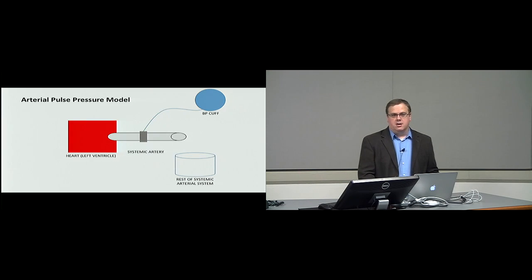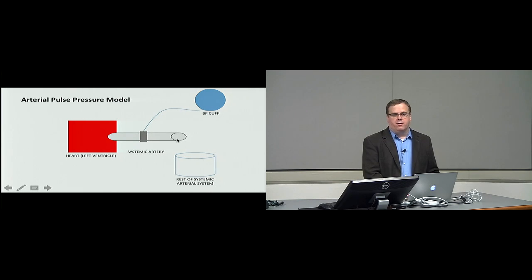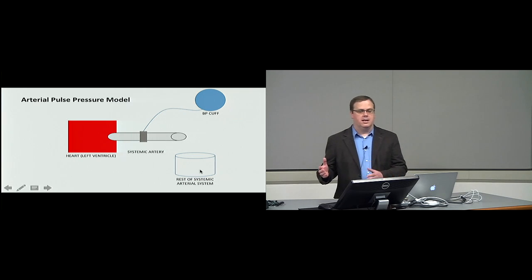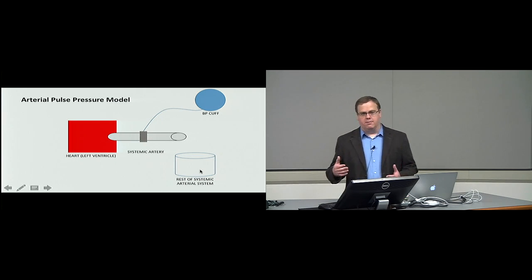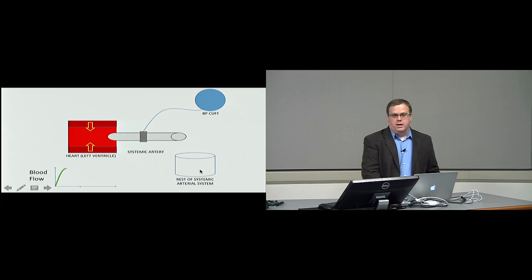This is our cartoon of how the system works. I have a heart — a left ventricle — that has blood in it. It's going to pump blood out into a systemic artery. That systemic artery is going to stretch and generate some blood pressure, measured by a blood pressure cuff here. Then as that blood flows through, it's going to leak out into the rest of the systemic circulation, which is largely a resistive flow network.